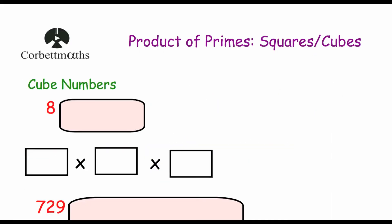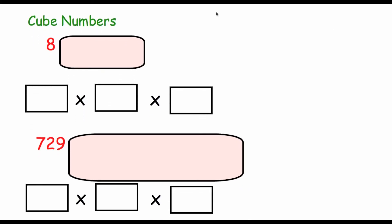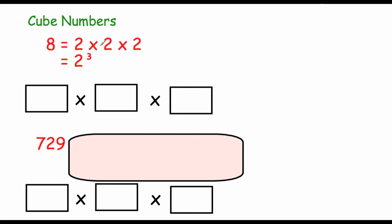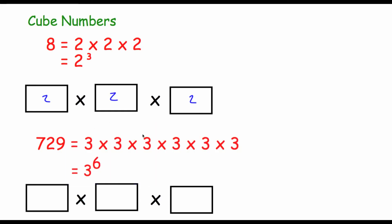Now we're going to look at what happens with cube numbers. We've got 8 and 729. 8 is equal to 2 times 2 times 2. A cube number is what you get when multiplying a number by itself and by itself again. Sharing three 2s equally gives 2, 2, and 2 — so 2 times 2 times 2 is 8. For 729: that's 3 to the power of 6, or six 3s. Sharing equally gives 3 times 3 in each group, so 9 times 9 times 9 equals 729. For cube numbers, the powers of the prime numbers will all be multiples of 3.